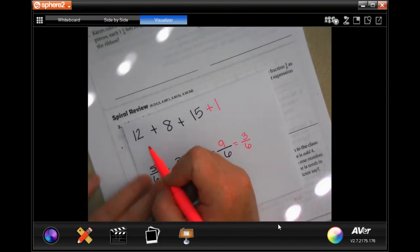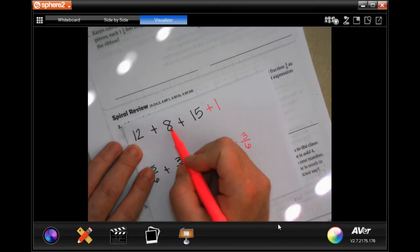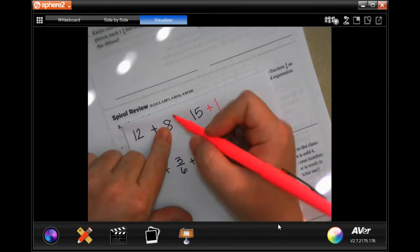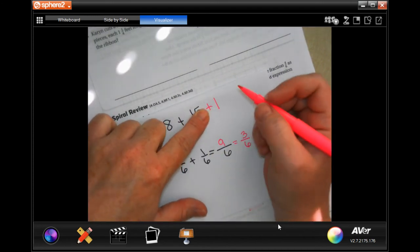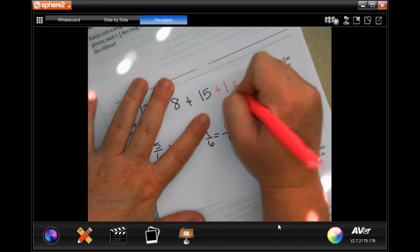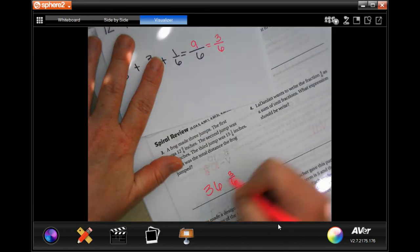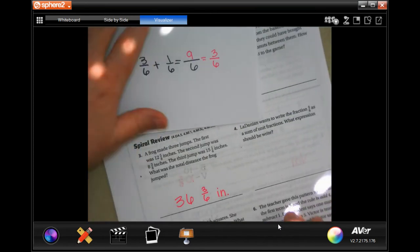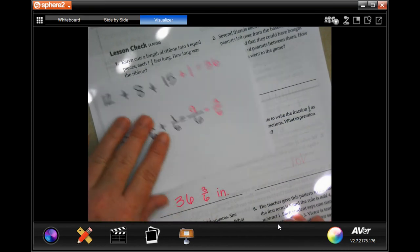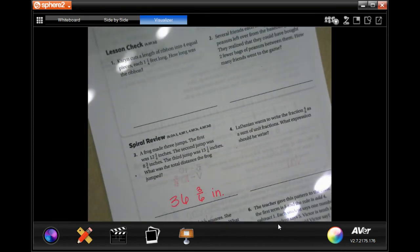But I need to find out all these numbers added up. So 12 plus 8 is 20, 20 plus 15 is 35, one more is 36. And remember we're measuring in inches. Write your work down guys.